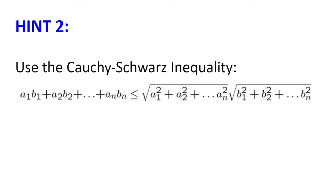So what will be a1, a2, all the way to an, and what will be b1, b2, all the way to bn?